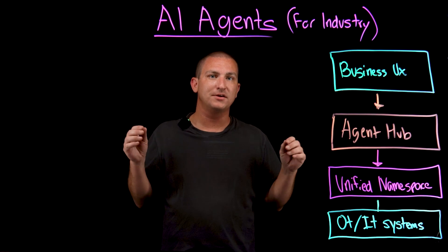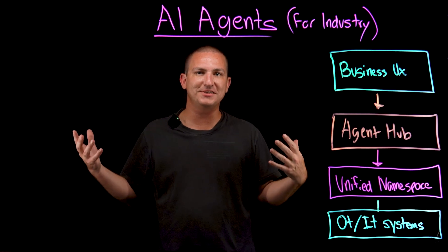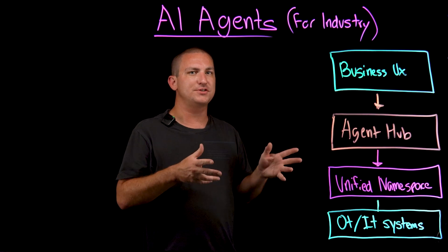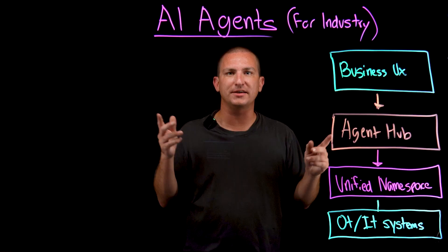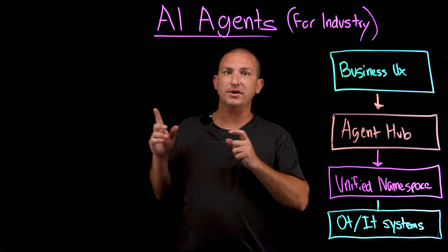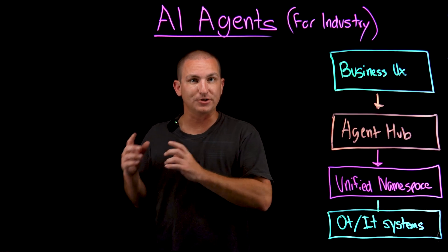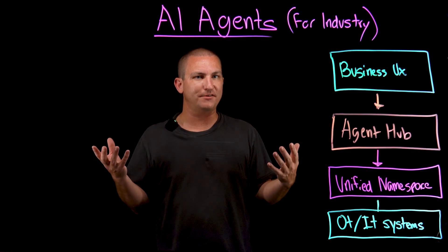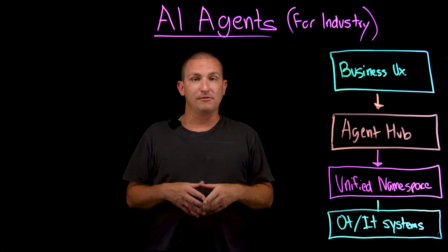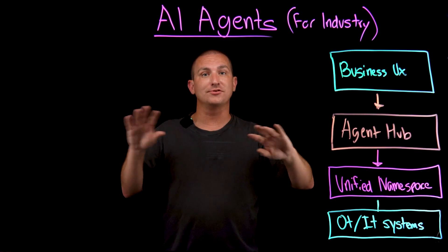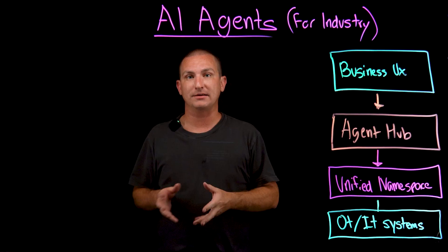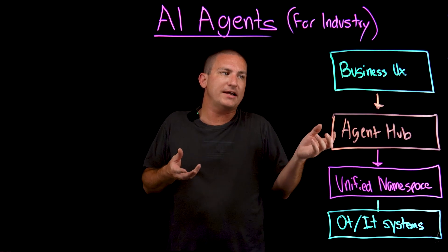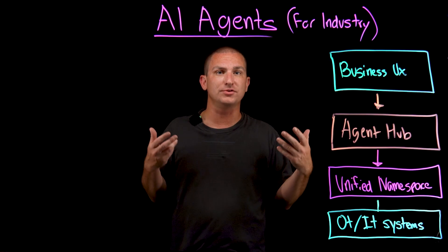Third example: a dynamic scheduling agent. It drinks live machine state topics, feeds them into a reinforcement learning optimizer, and republishes a fresh job sequence to the MES every five minutes. Not only do you get higher capacity and utilization by optimizing your schedule in real time, but you're also making the life of your scheduler much easier. The scheduler is the most valuable person in the plant — if they get hit by a bus, your manufacturing environment is screwed. Consider using an AI agent to help automate some of those manual scheduling tasks.